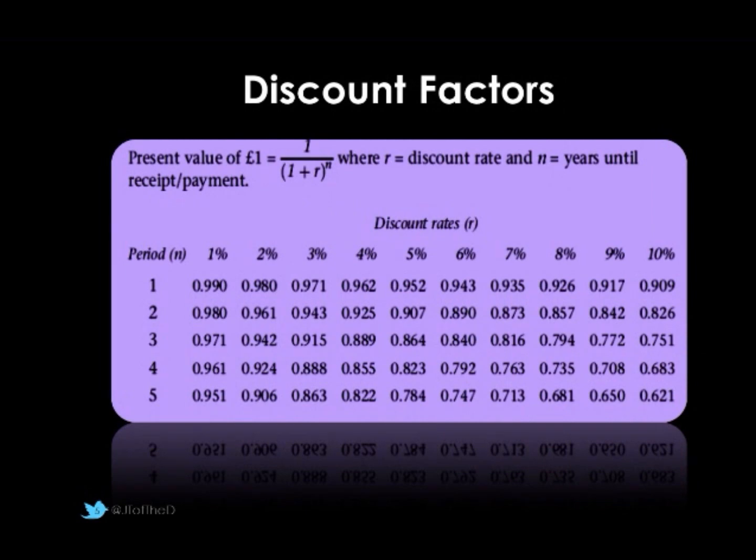So far we talked about the future value — we said our money was worth more in the future. Our £125,000 was worth £125,000 in five years, and our £100,000 was worth over £160,000. Well, that's the net future value. To work out the net present value, we actually need to discount or reduce those future sums to represent what would be the equivalent today. We do this using discount rates.